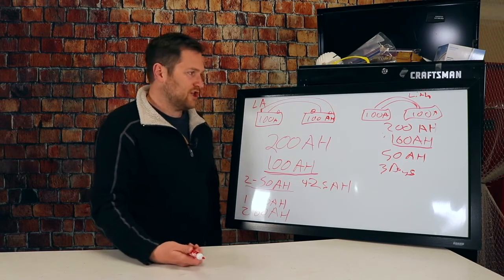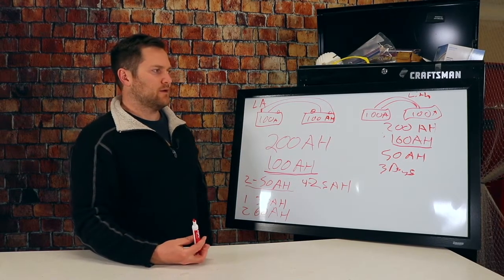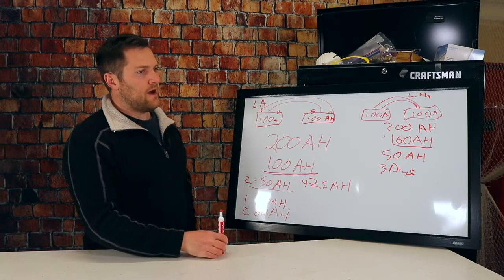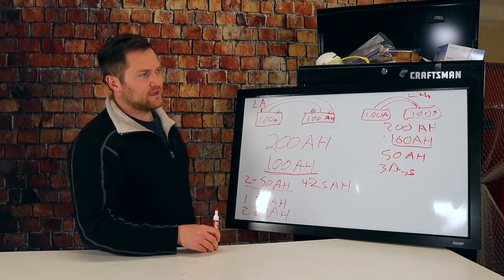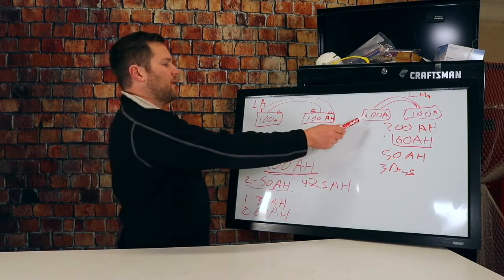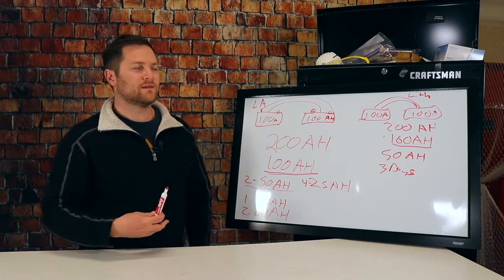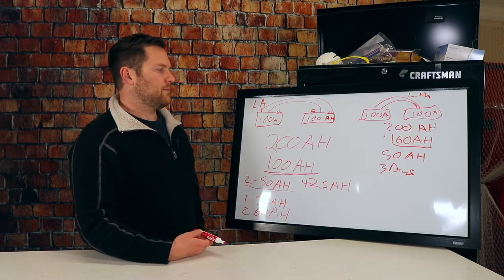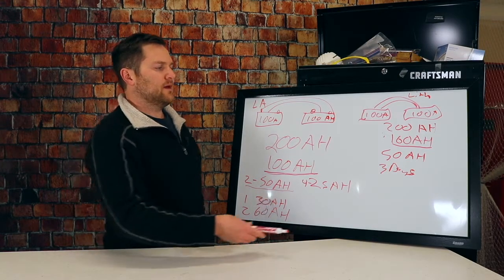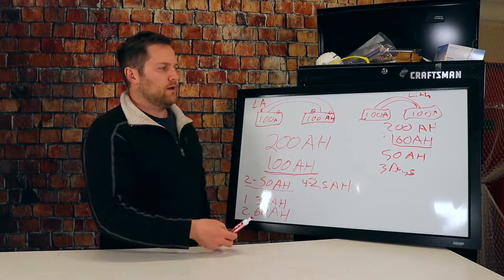They're getting cheaper. Batteries used to be about 1200 bucks a piece. Now I just saw that they were down to about six to 700 bucks a piece for a hundred amp hour battery. Which is a great deal compared to, you know, a lithium will last longer when you're out, but it'll also last longer in how many charge cycles you can have and how many years you'll have the battery than the lead acid.